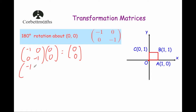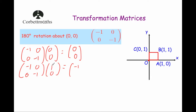Next, we multiply the matrix minus 1, 0, 0, minus 1 by the point A, which is the point 1, 0. Now when we rotate this 180 degrees about the origin, it should move to the point minus 1, 0. So let's have a look and see. So minus 1 times 1 is minus 1, 0 times 0 is 0, adding them together is minus 1. And then the second row: 0 times 1 is 0, minus 1 times 0 is 0, and adding them together is 0. So the point A moves to here — A dash is the point minus 1, 0.